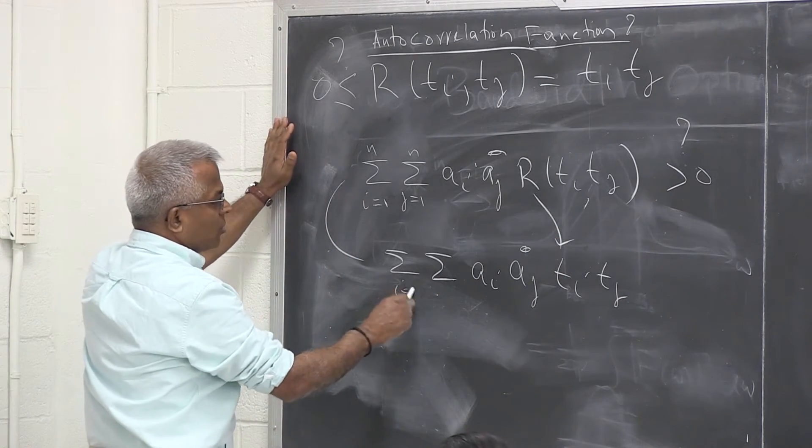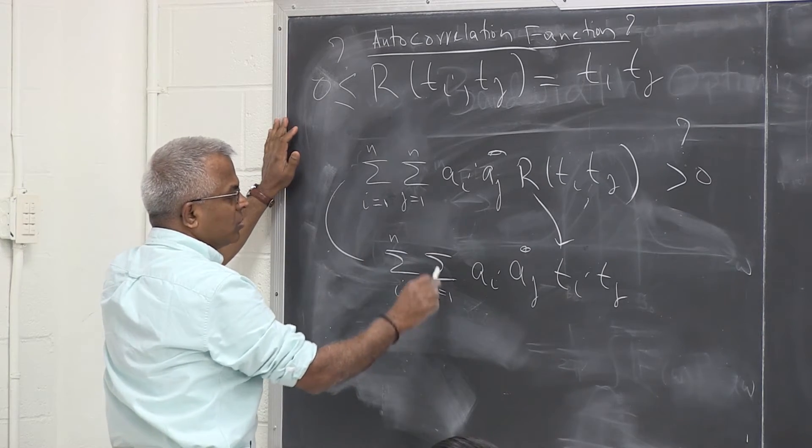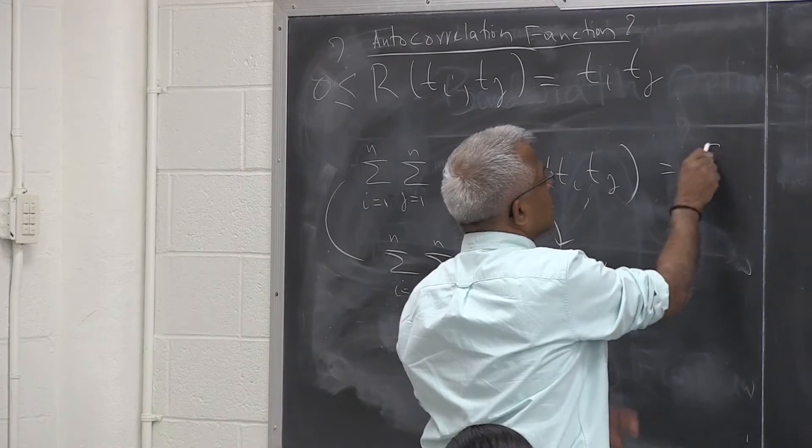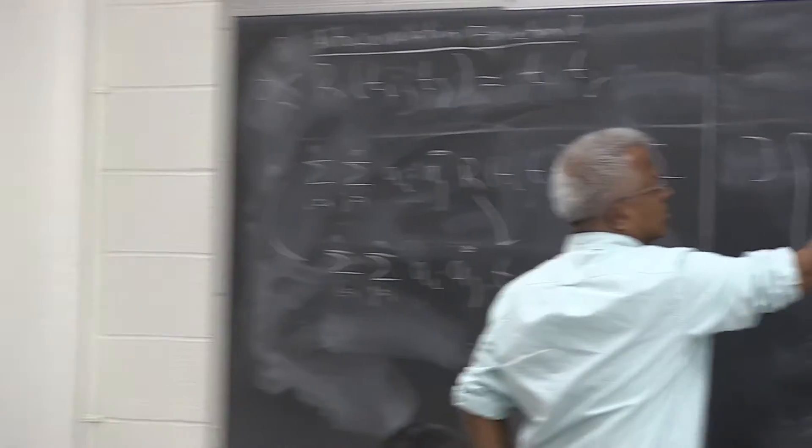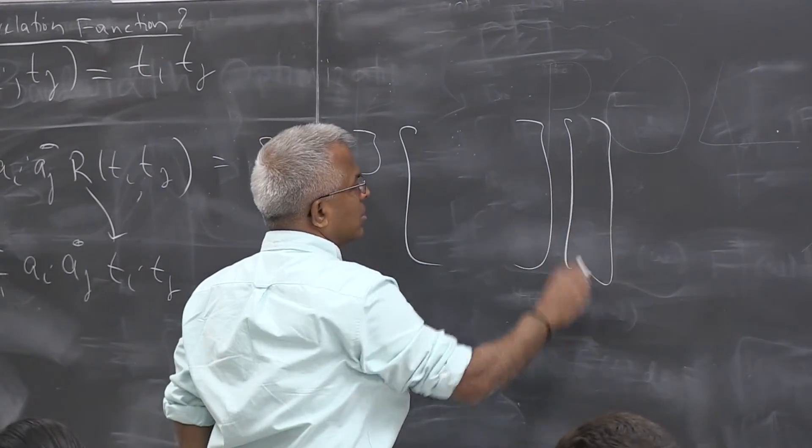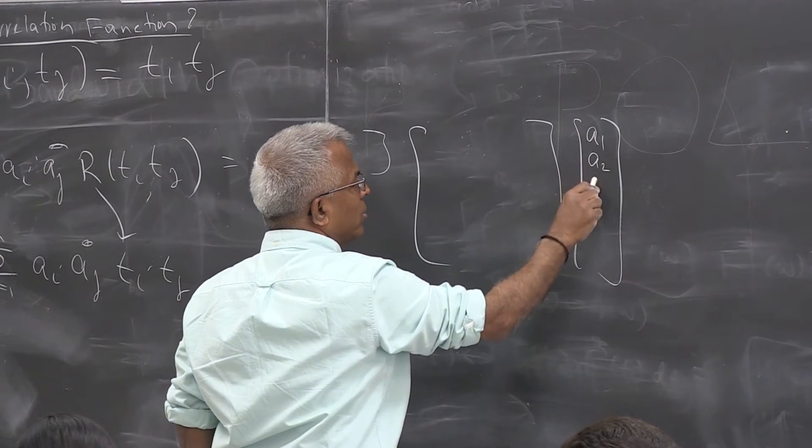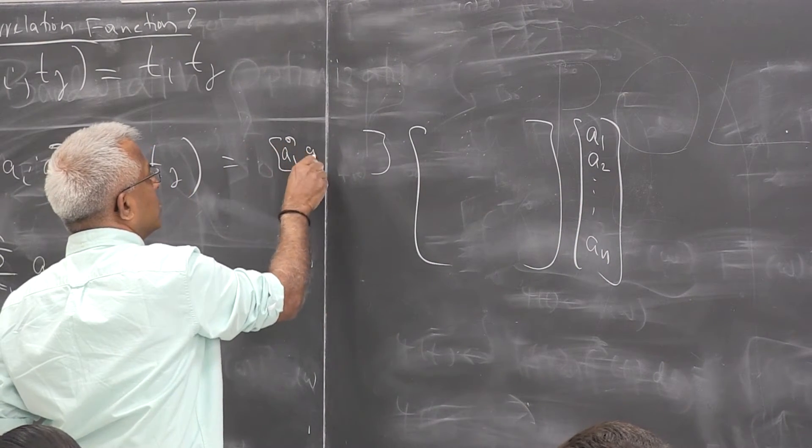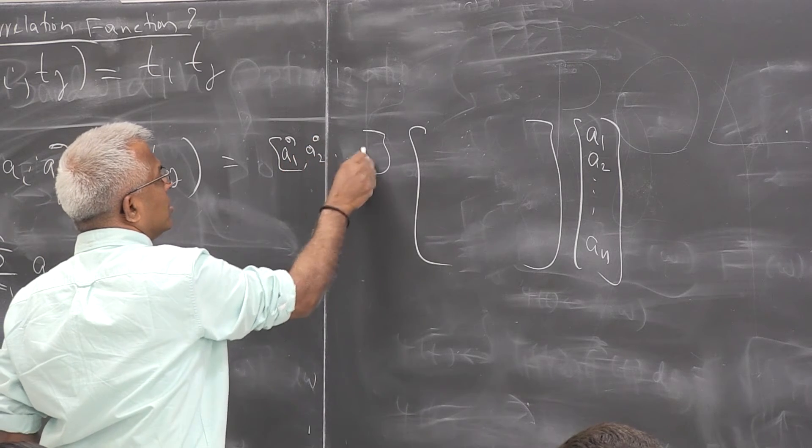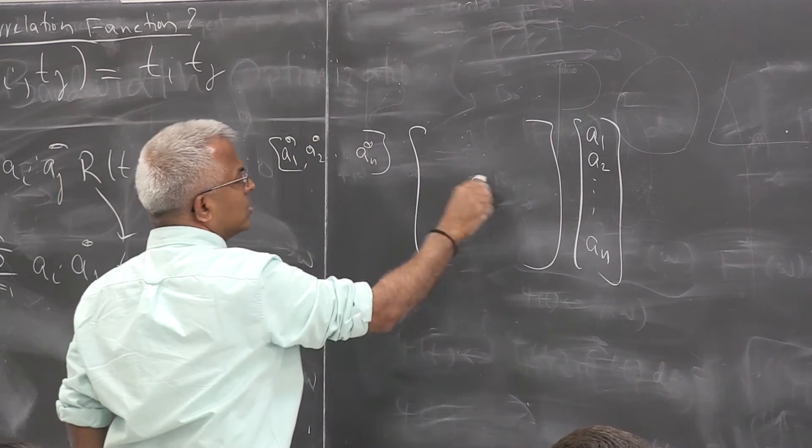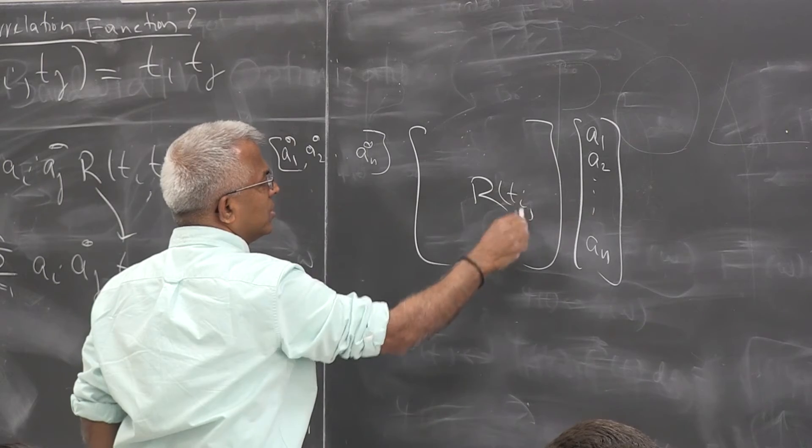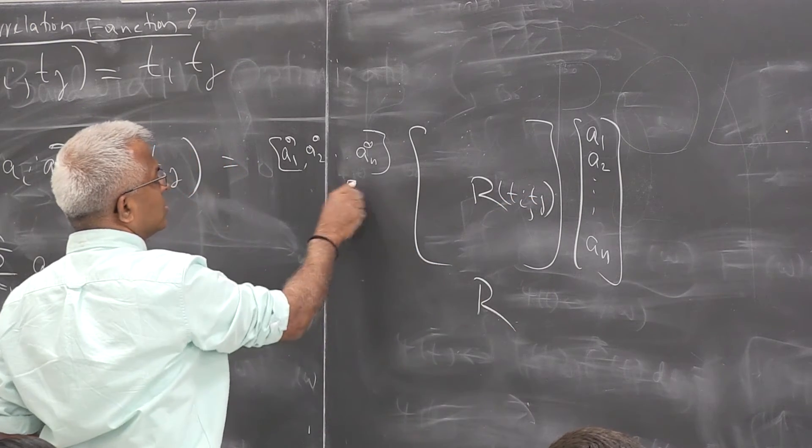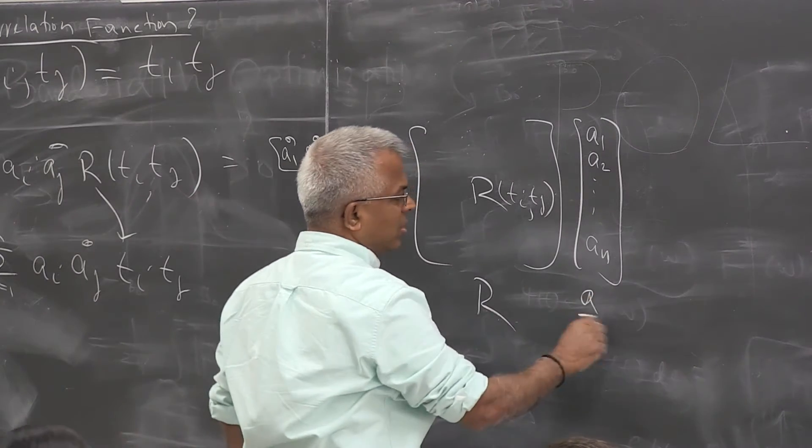But suddenly you see, this is i equal to 1 through n, j equal to 1 through n. If you remember, we also said this can be written like this. A1, a2, etc., a_n, a1 star, a2 star, etc., a_n star. This is R matrix with the t_i, t_j here. So this is R, this is a star, this is a.